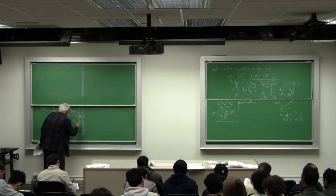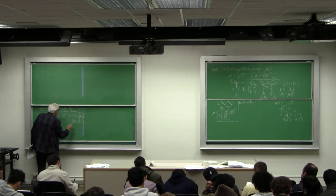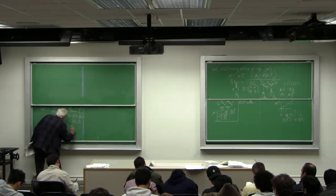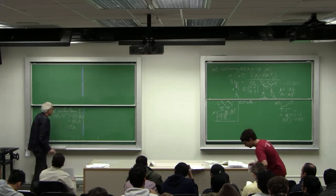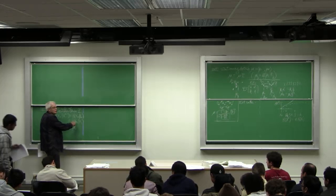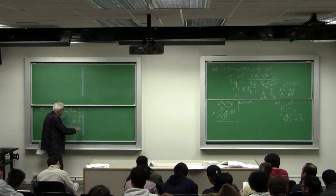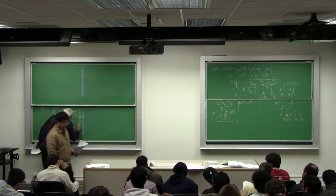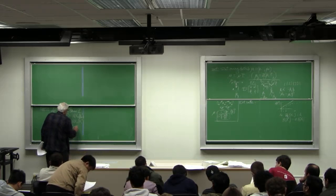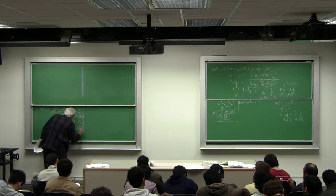Now, X_1 takes on the value i with probability mu_i. And then the entropy of X_2, given that it's in state i at time 1, is H of P_i.